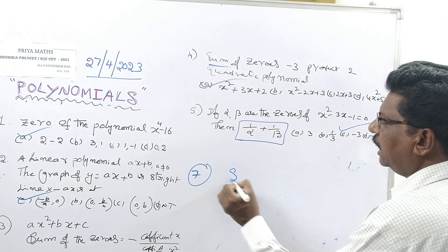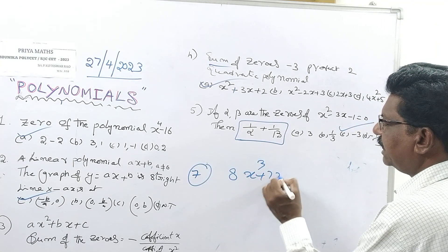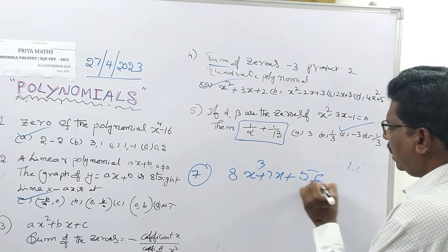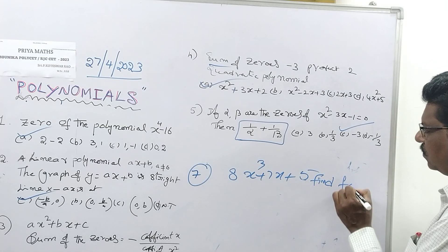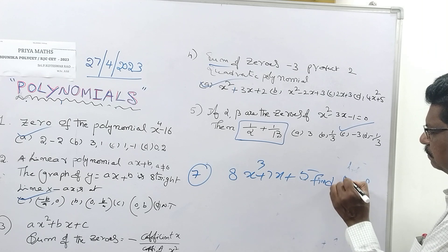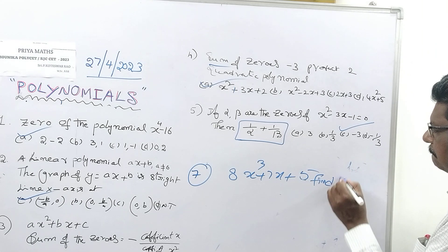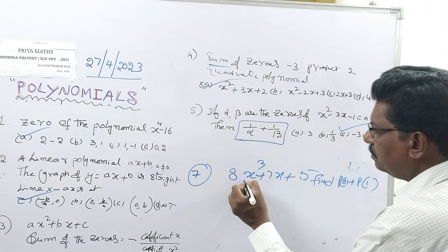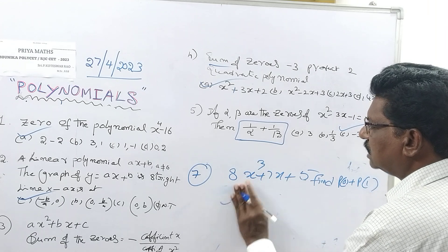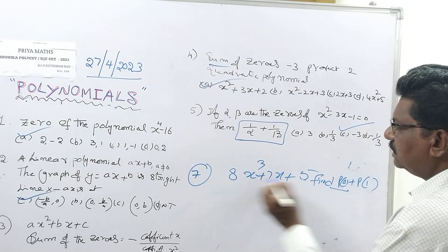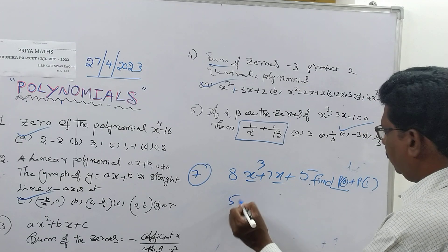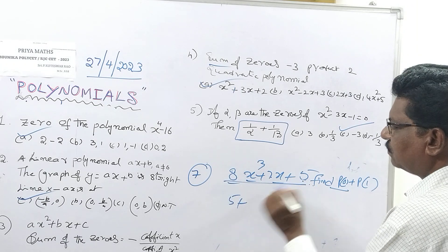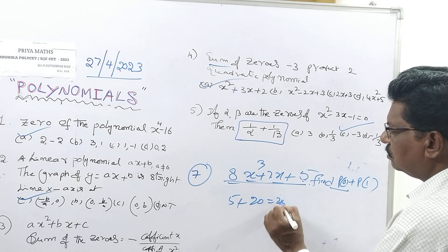Seventh one: For the polynomial 8X cubed plus 7X plus 5, find P(0) plus P(1). P(0): substituting X = 0, all terms with X become 0, remaining value is 5. P(1): 8 plus 7 = 15, plus 5 = 20. So P(0) plus P(1) = 5 plus 20 = 25.